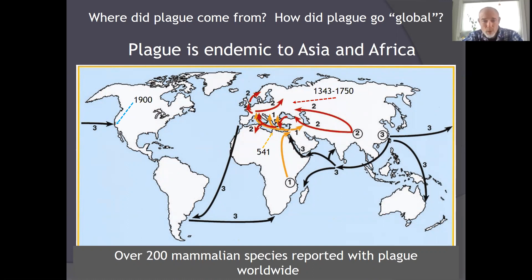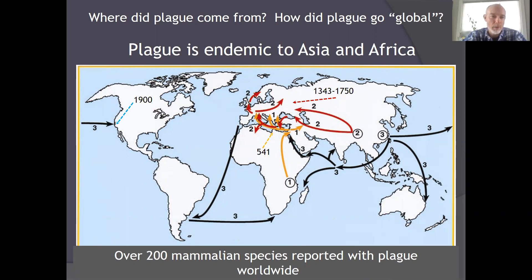The yellow or orange arrows show us the routes of transmission of what's known as Justinian's plague in the 500s. The red arrows show us routes of transmission of the Black Death, the roughly 400-year period in the 1300s through 1700s that wiped out large chunks of Europe. The black arrows represent the modern pandemic.